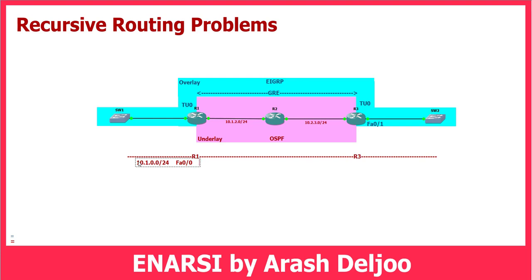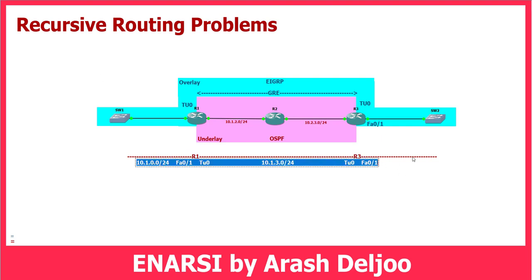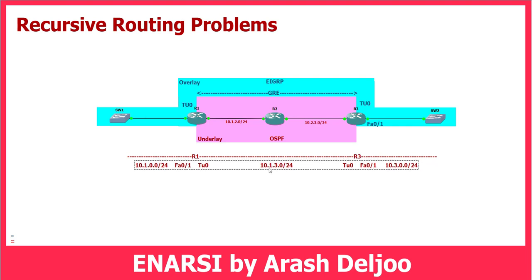On Tunnel0, this is the GRE tunnel. On Router3, we also have Tunnel0 and FastEthernet0/1. FastEthernet0/1 on Router3 is connected to the 10.3.0.0/24 network. This network is our overlay network, but you can also see the underlay.